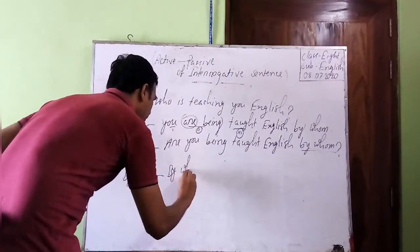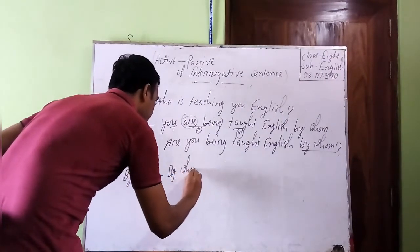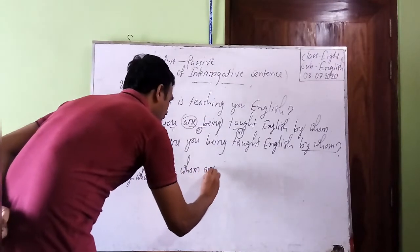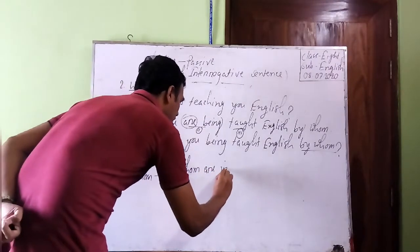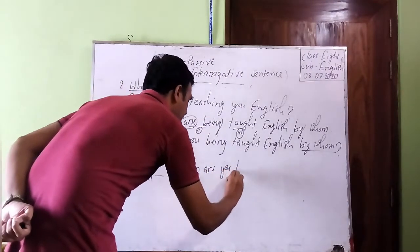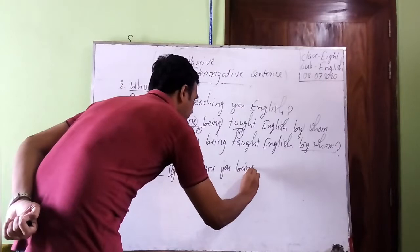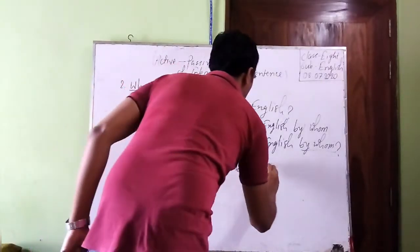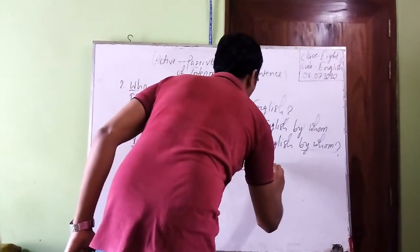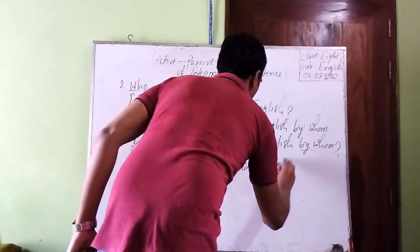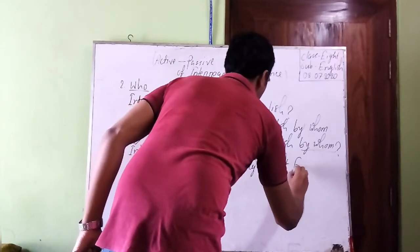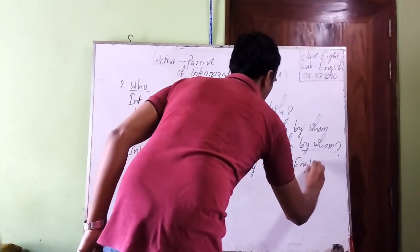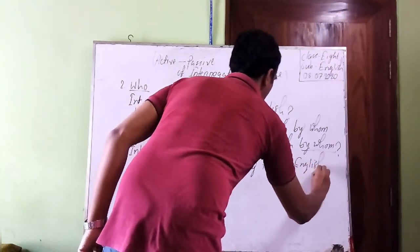So the final answer will be: 'By whom are you being taught English?' This is the final interrogative passive form for the 'Who' rule.